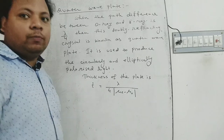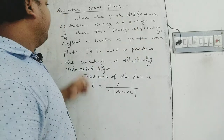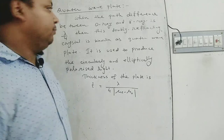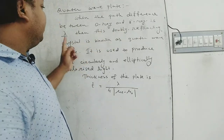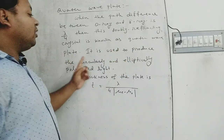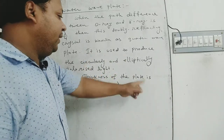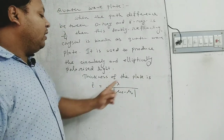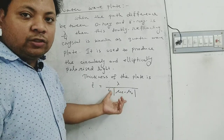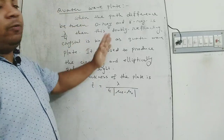Next, quarter wave plate. When the path difference between the ordinary ray and extraordinary ray is λ/4, where lambda is the wavelength of the light used, then this doubly refracting crystal is known as a quarter wave plate. It is used to produce circularly and elliptically polarized light. In this case, the thickness of the plate is t = λ / [4(μₑ − μ₀)], that is, divided by four times the difference of the refractive indices of the extraordinary and ordinary rays.